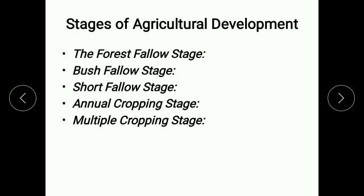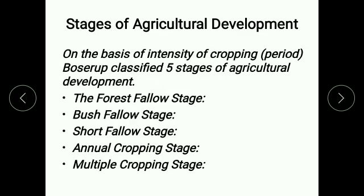In order to explain agricultural development, Boserup propounds five different stages. On the basis of the intensity of cropping period, Boserup classified five stages of agricultural development: the first stage is forest fallow, the second is bush fallow, the third is short fallow, the fourth is annual cropping, and the last one is multiple cropping.